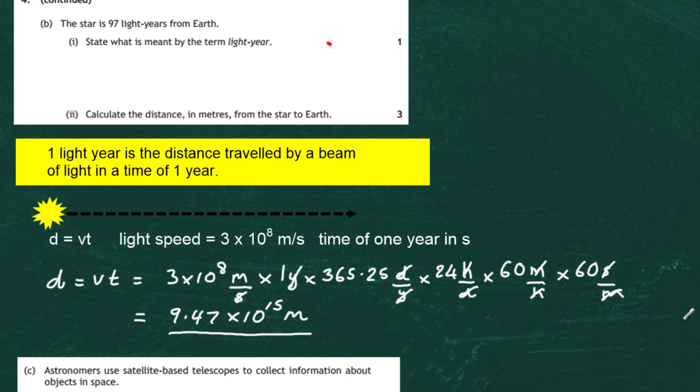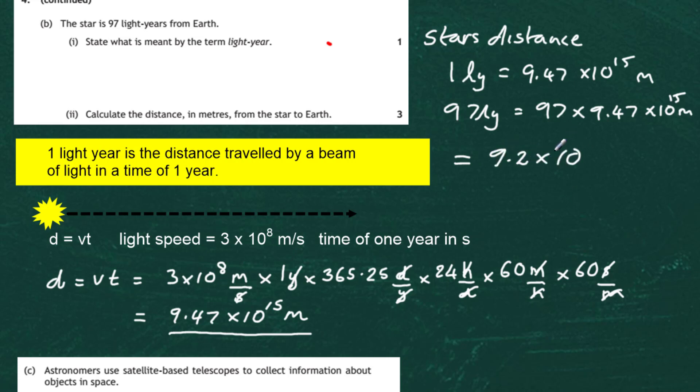But of course the question asks us what about 97 light years? So the star's distance is going to be 97 times that, because we know that one light year is going to be equal to 9.47 times 10 to the power of 15 meters. So therefore 97 light years is going to equal 97 times 9.47 times 10 to the power of 15 meters. And therefore that's going to give us an answer of 9.2 times 10 to the power of 17 meters. So that's the distance that star is away, that's the equivalent of 97 light years.